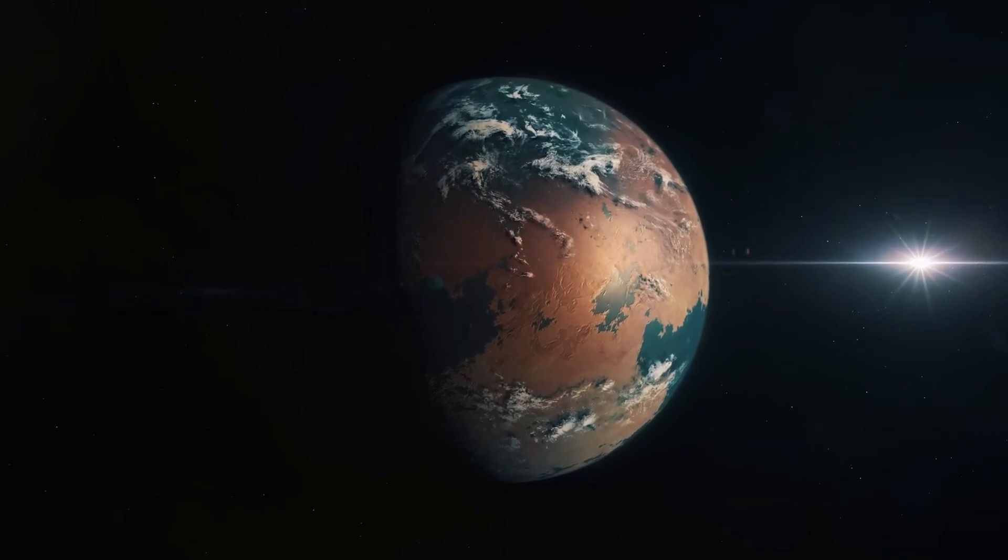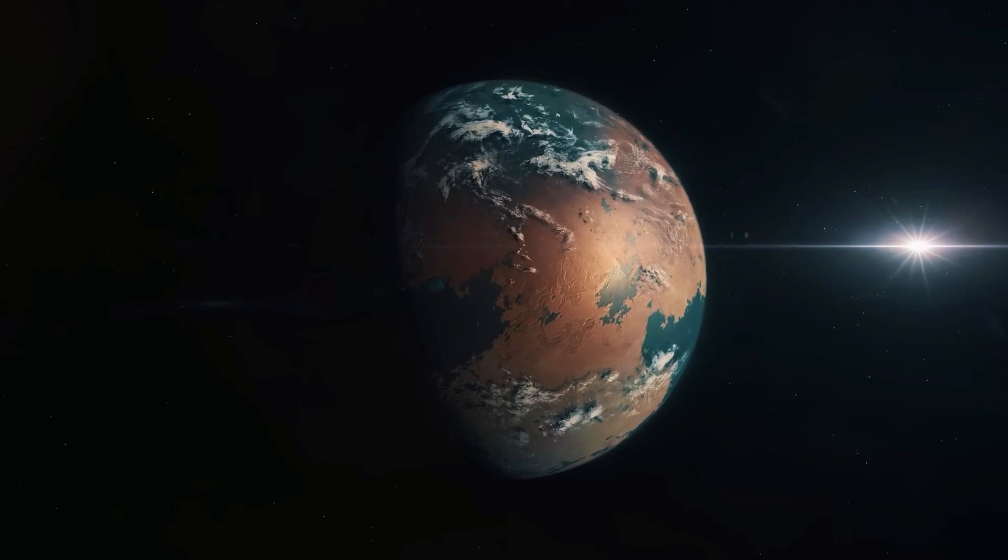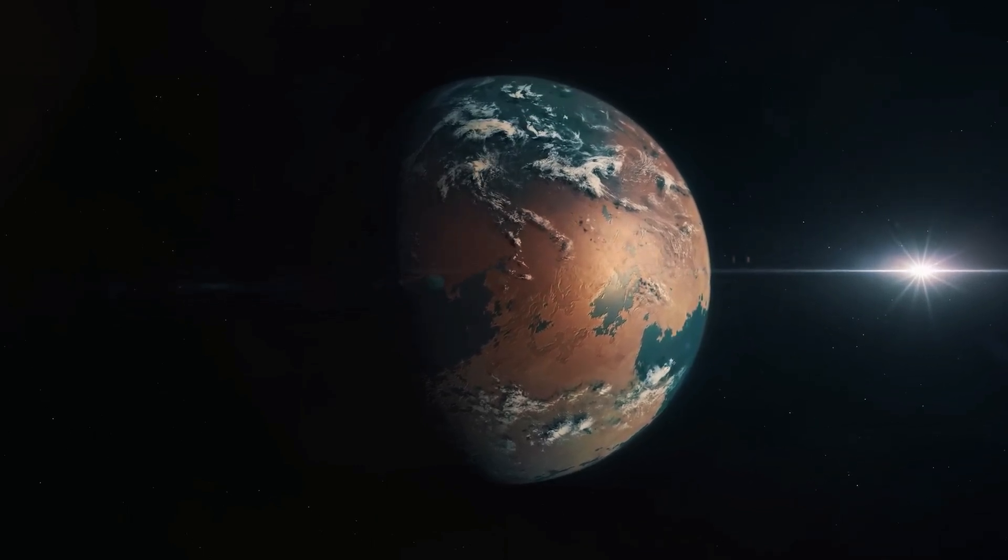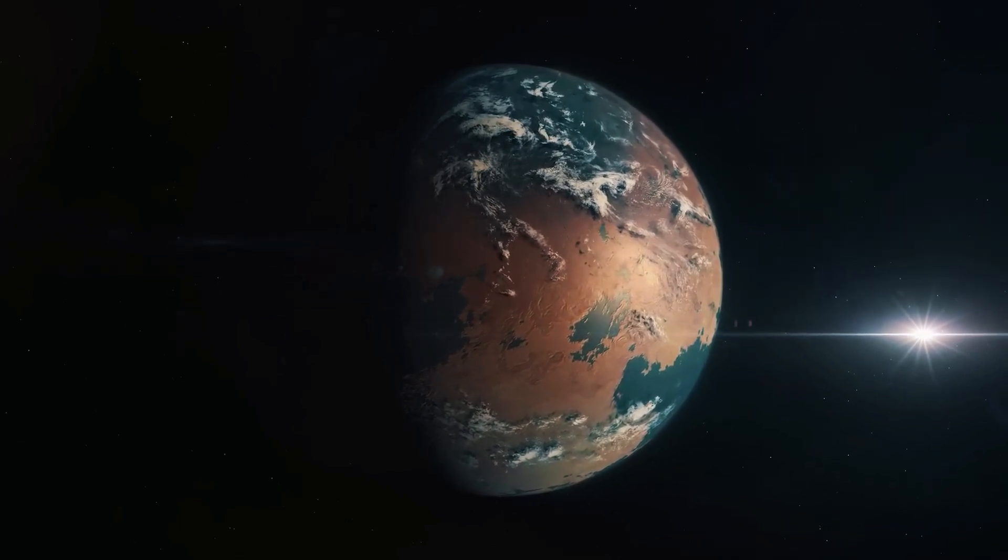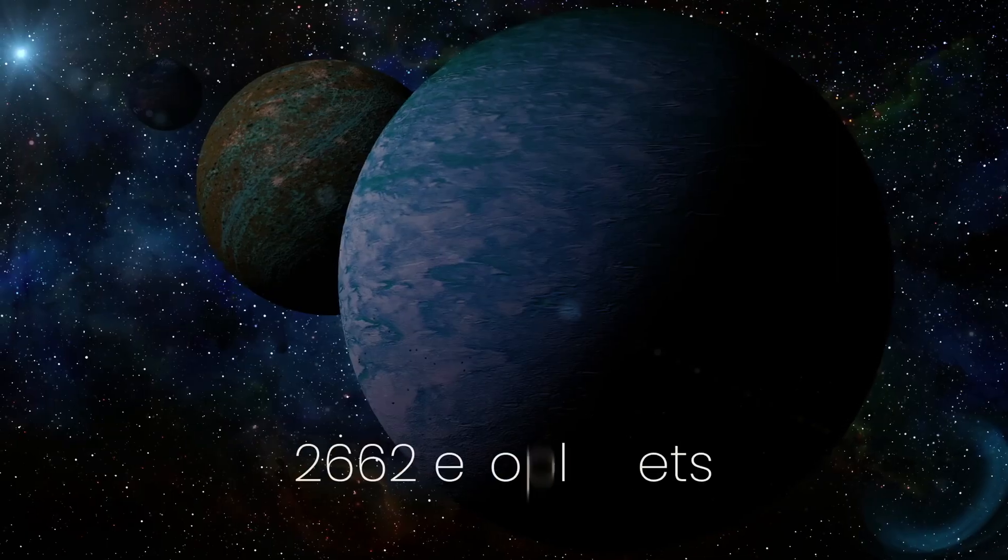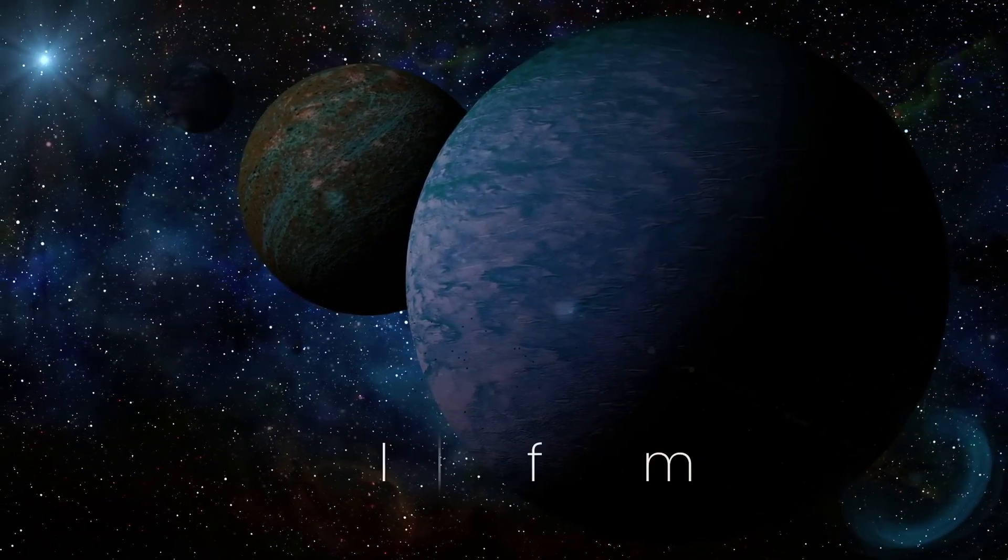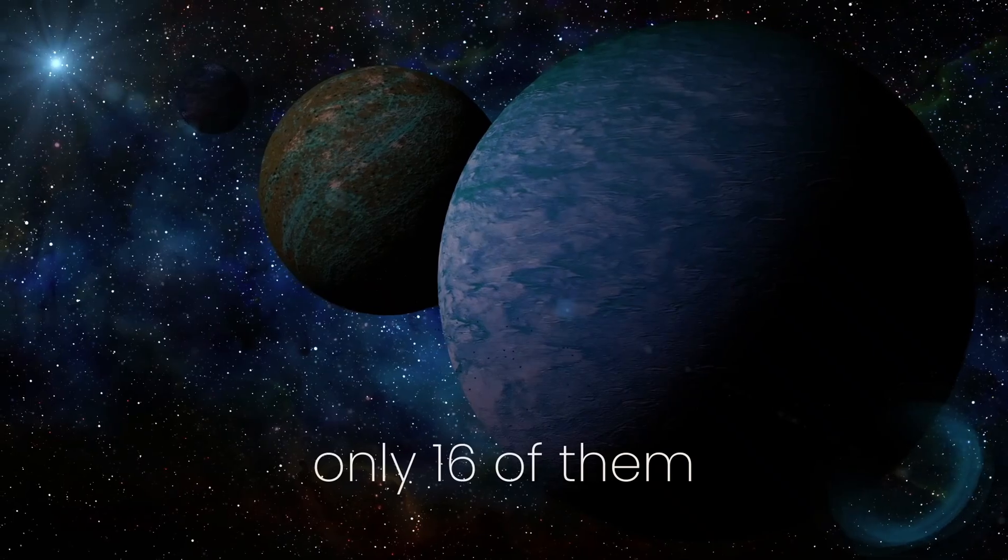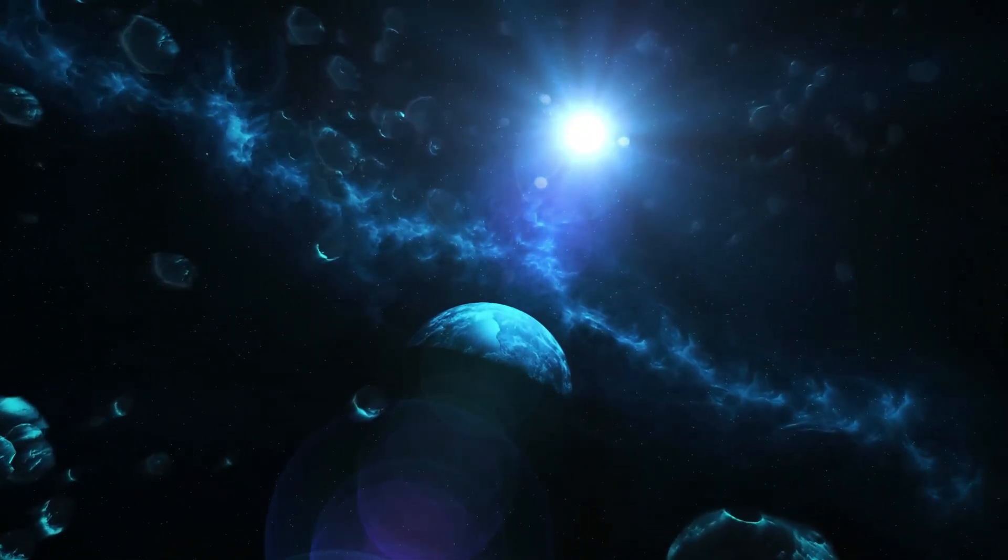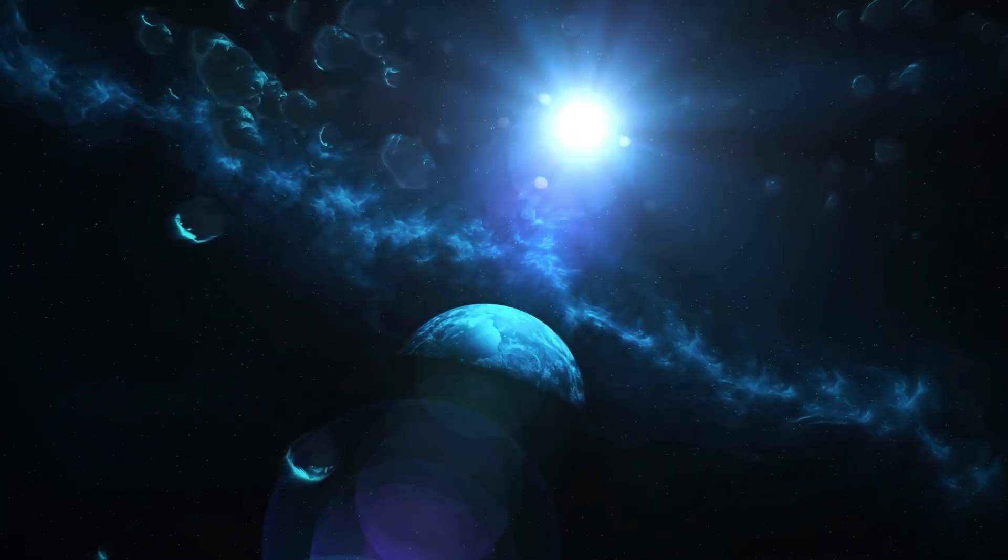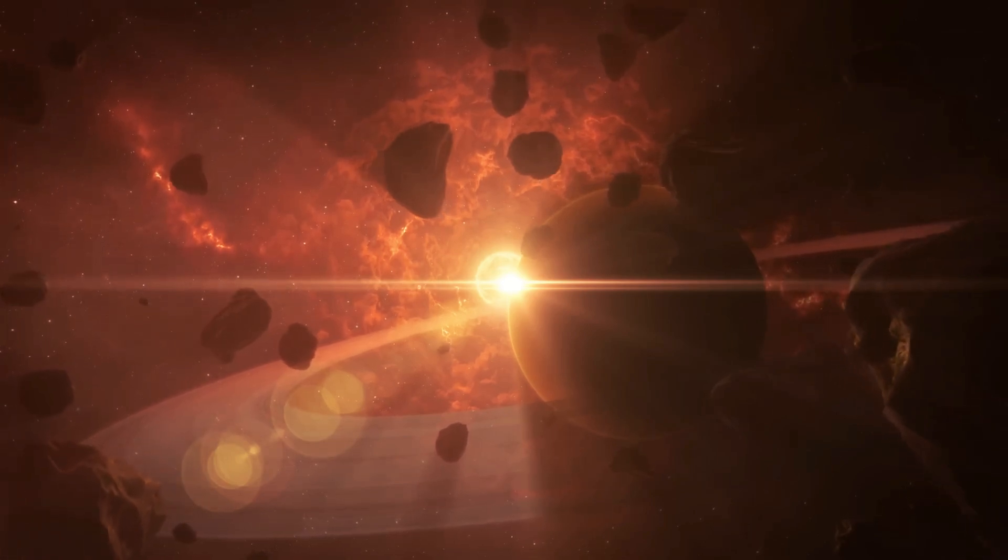Kepler-1649c provides yet another example of an Earth-sized planet in the habitable zone of a red dwarf star. But before we get ahead of ourselves, it's important to note that out of the 2,662 exoplanets identified by Kepler, only 16 of them lie inside the Goldilocks zone. And out of these 16, some of these planets are tidally locked with their parent stars, meaning that only one hemisphere of the planet faces the star. And this is not ideal for life.